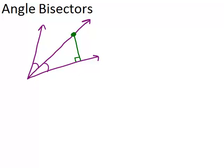which would have to be a line segment perpendicular to that angle side, is the same distance as the shortest distance to the other side of the angle, which again would have to be a perpendicular line segment. So that means these two segments are congruent.